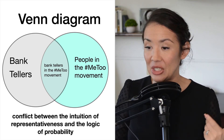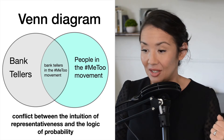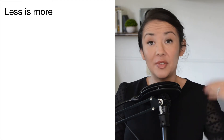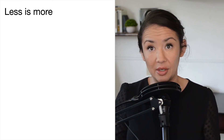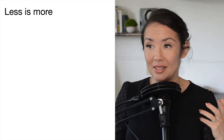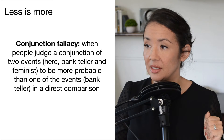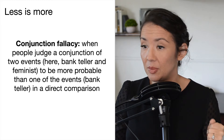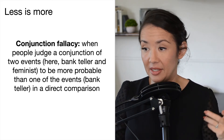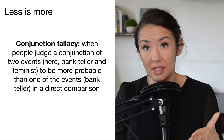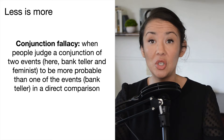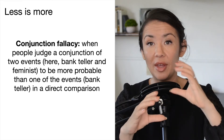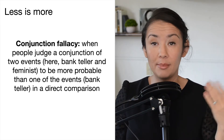There's a conflict between the intuition of representativeness and the logic of probability. One way to develop a strategy to help you make more effective decisions is to think of 'less is more.' In the conjunction fallacy, people judge a conjunction of two events — being a bank teller and being a feminist — to be more probable than one event alone. When faced with joint probabilities, either event in isolation will be more probable than the two occurring together. That's what less is more means here.